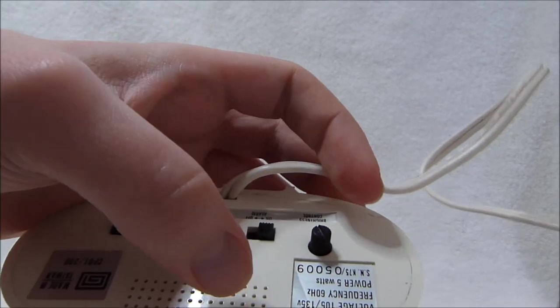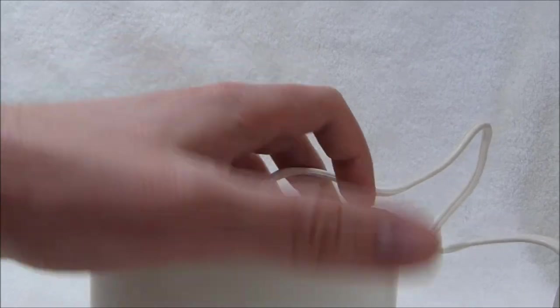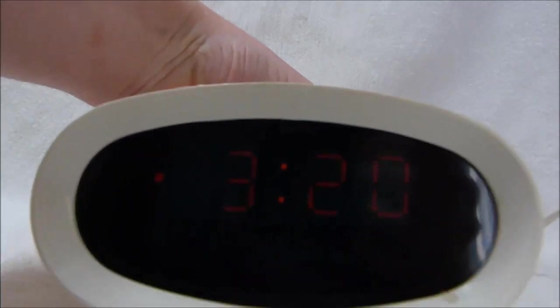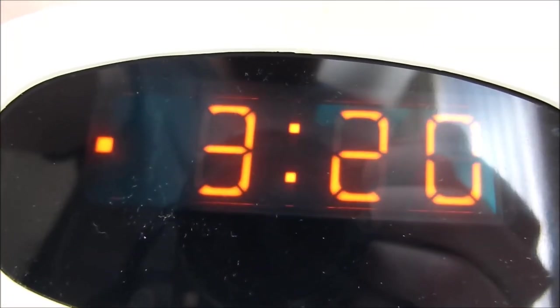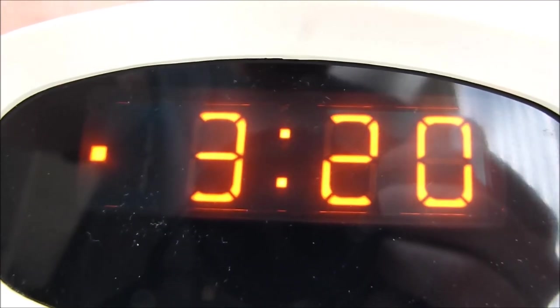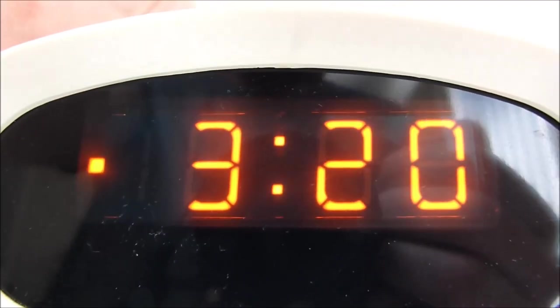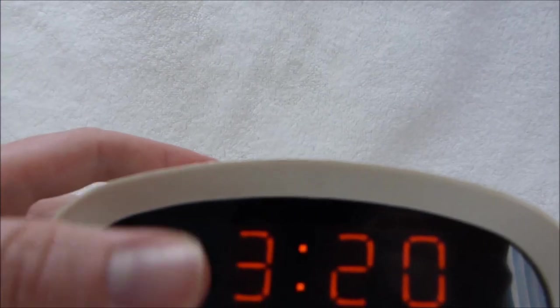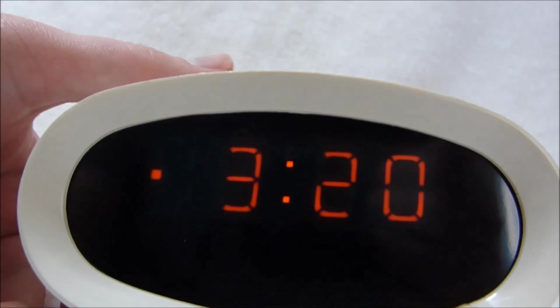The last control on the back here is the brightness control. As you can see, it can be dimmed way down or cranked pretty far up. Quite a bit brighter than any of the LEDs available at the time. I'm not sure why they didn't do automatic brightness control on this one. That would have been a nice feature.